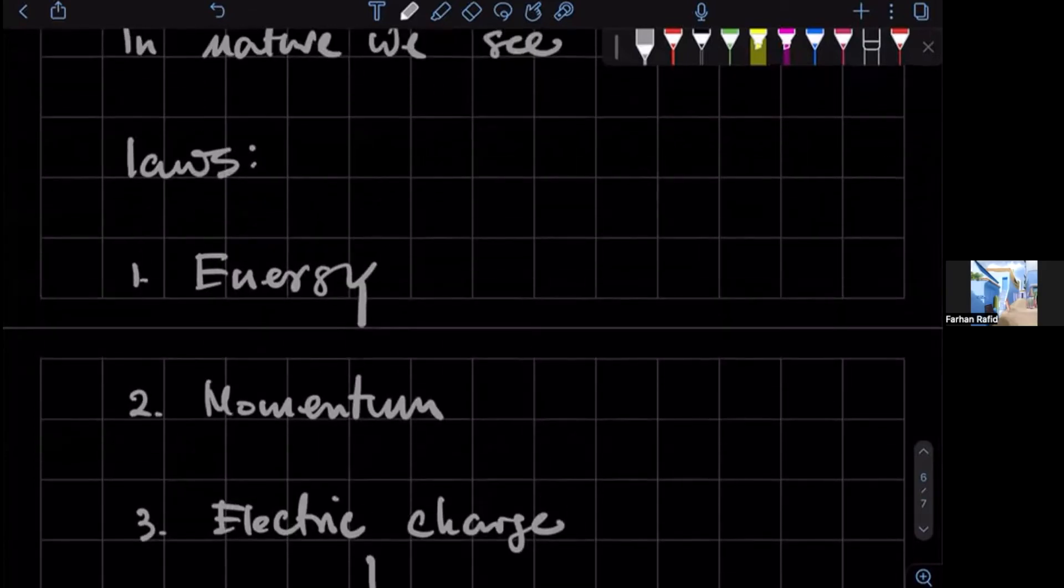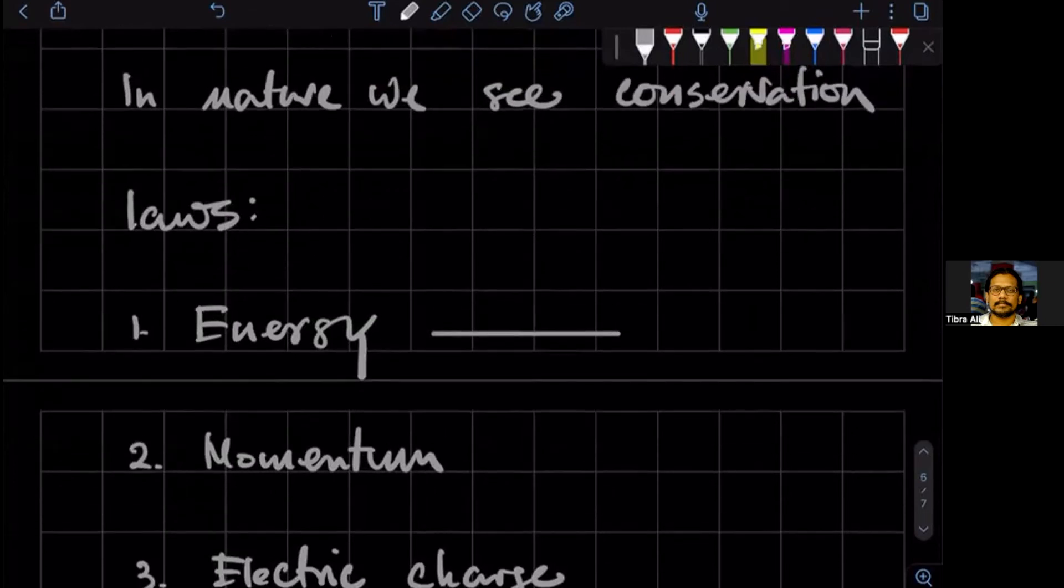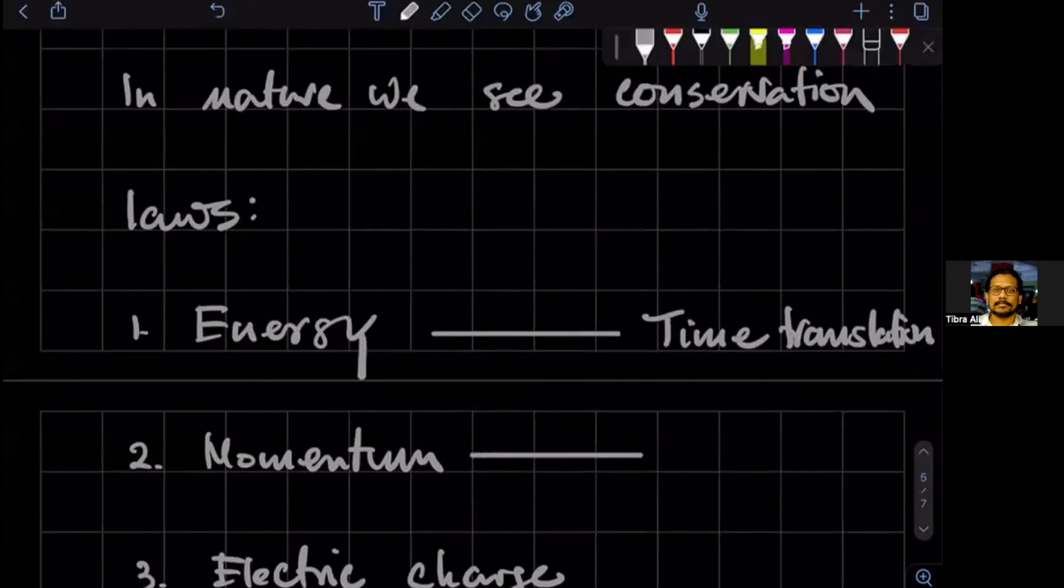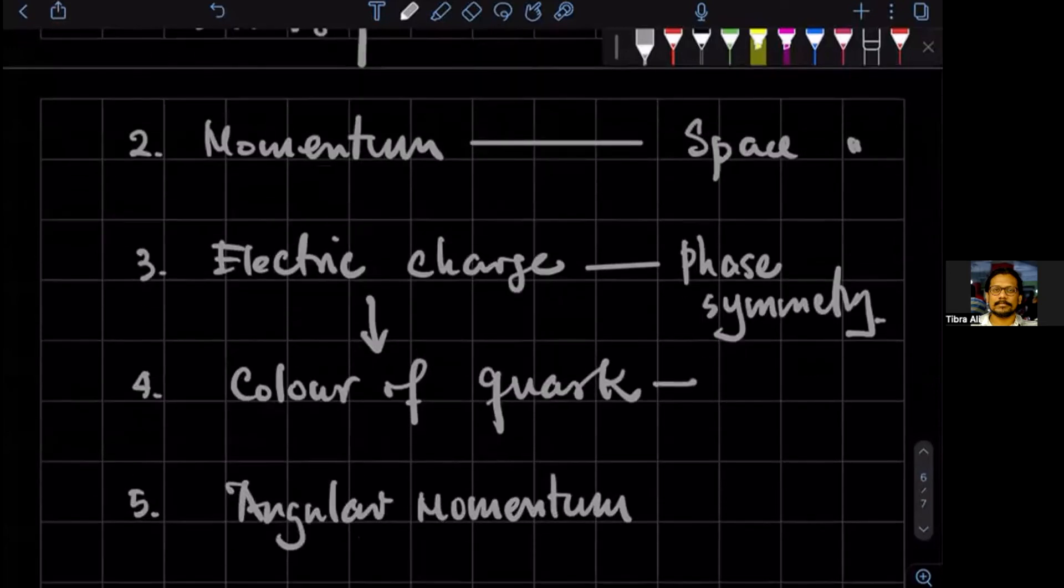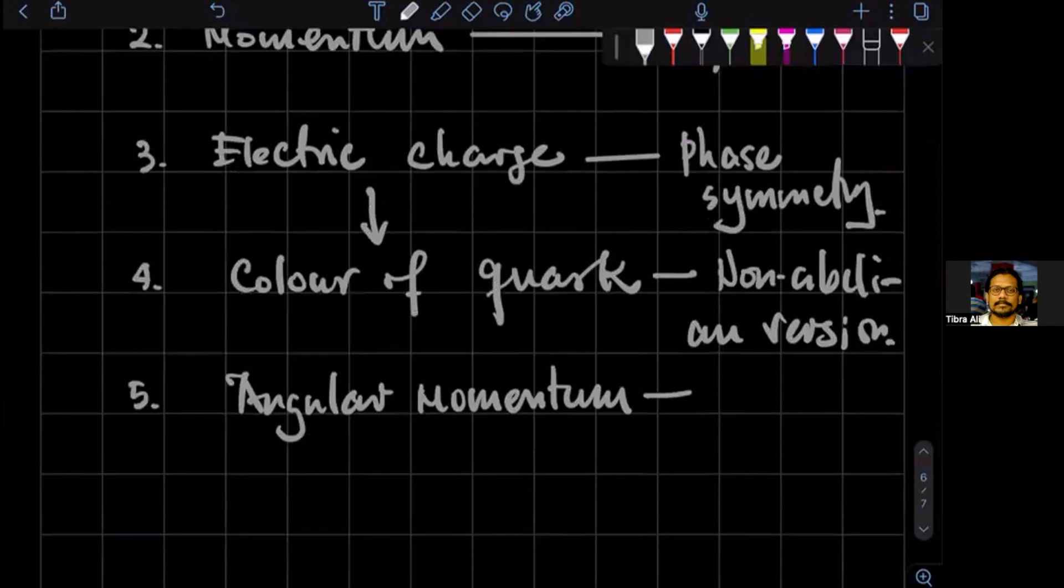So what Noether showed that for every conserved quantity, there is a symmetry. So energy is conserved means that your theory is invariant under translation under time. That means that your theory doesn't depend on whether it was today or tomorrow we did the experiment. And it also shows that momentum is conserved as a consequence of space translation. Electric charge is conserved as a consequence of a phase symmetry. And color of quark is a consequence of a non-abelian version of phase symmetry.